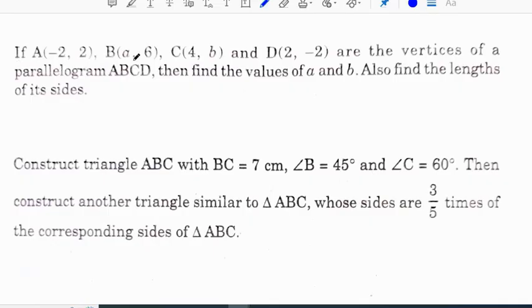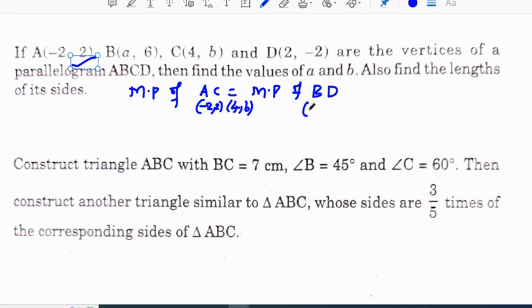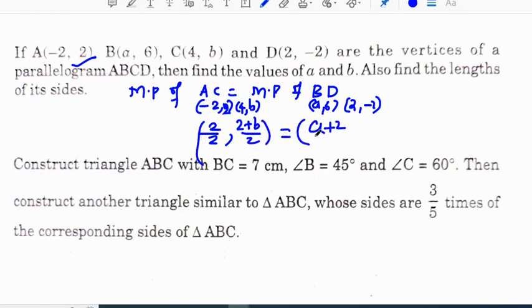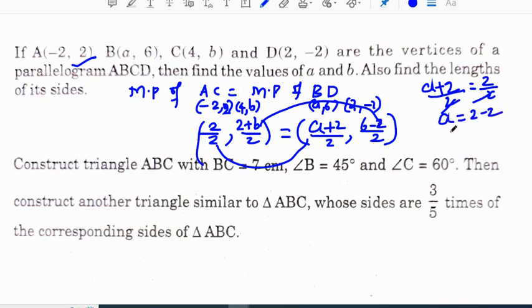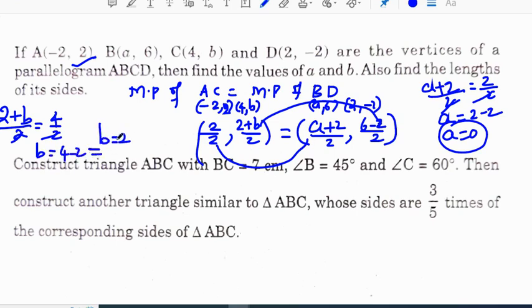If A(-2, 2), B(a, 6), C(4, b), D(2, -2) are the vertices of parallelogram ABCD, find the values of a and b. We know the property: midpoint of AC equals midpoint of BD. Point A is (-2, 2), C is (4, b), B is (a, 6), D is (2, -2). Midpoint AC: ((-2+4)/2, (2+b)/2) = (1, (2+b)/2). Midpoint BD: ((a+2)/2, (6-2)/2) = ((a+2)/2, 2). Equating x-coordinates: (a+2)/2 = 1, so a = 0. Equating y-coordinates: (2+b)/2 = 2, so b = 2. The value of a is 0 and b is 2.